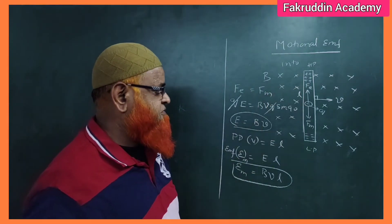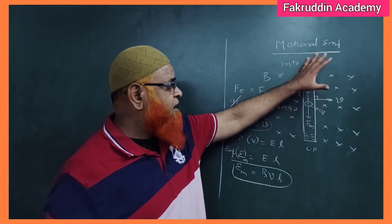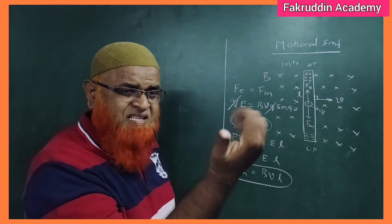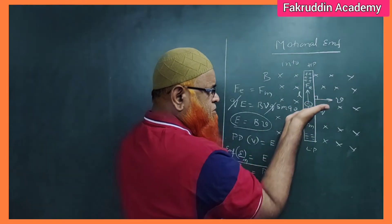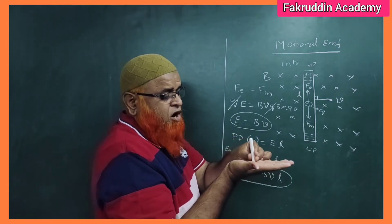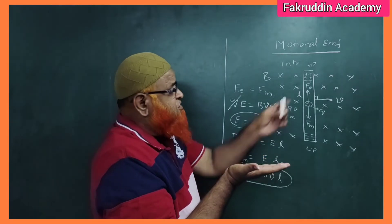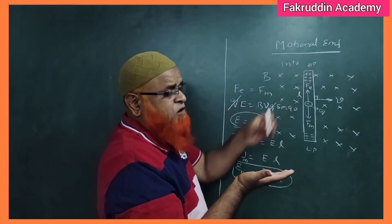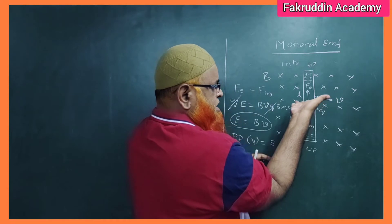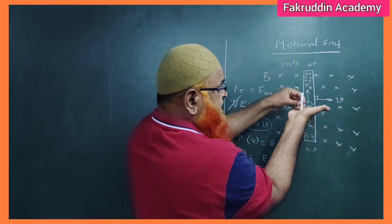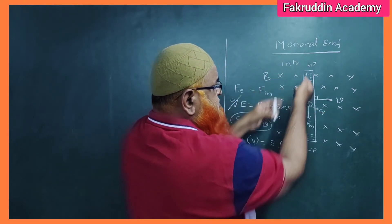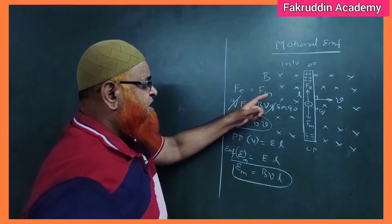Motional EMF is developed in this rod whenever it moves with certain velocity. This is explained by the right-hand palm rule. The four fingers represent the magnetic field B, the thumb represents the velocity, and the upper part of the palm represents positive charge — the higher potential. So the higher potential is always upwards and negative charge is always downwards.